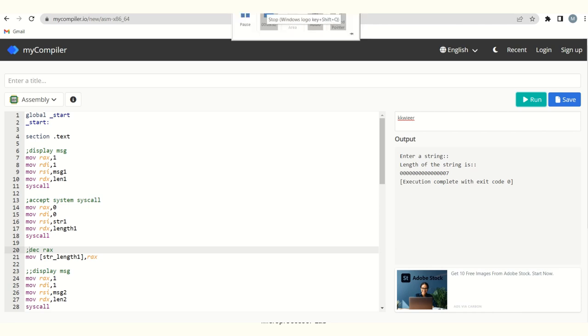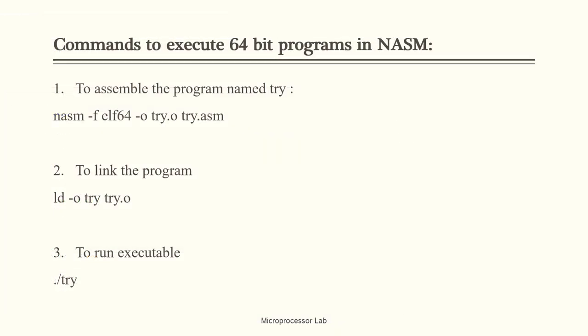If you want to run this program using the command prompt, these are the commands: first, use NASM to compile the program, which checks for errors and creates the object file; second, link to create the executable; and third, execute the file. These 3 commands allow you to fully run the program. Hope you have understood today's program — you can run it on NASM to find out how to calculate the length of a string.